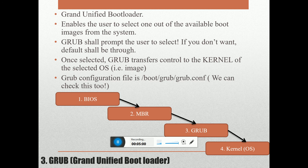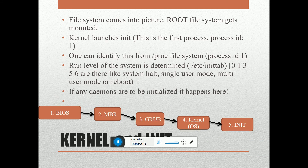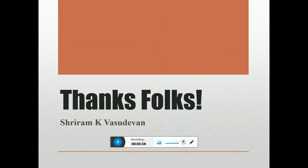GRUB will then load the kernel. Once the appropriate image is selected, the kernel takes over — the kernel is essentially the operating system. When the kernel is launched, the root file system gets mounted, and then INIT gets launched. INIT is a process launched right at the beginning; it is given process ID 1. This is the first process launched, the parent process for all processes, and it is a daemon process — nobody needs to launch it manually. You can verify this by going to /proc where process ID 1 is INIT.